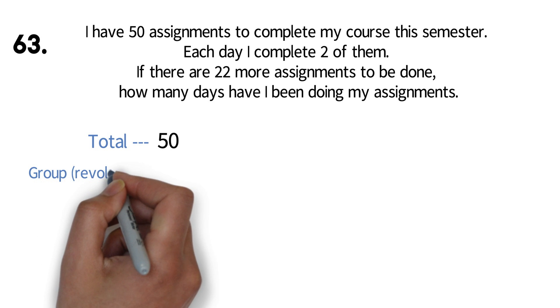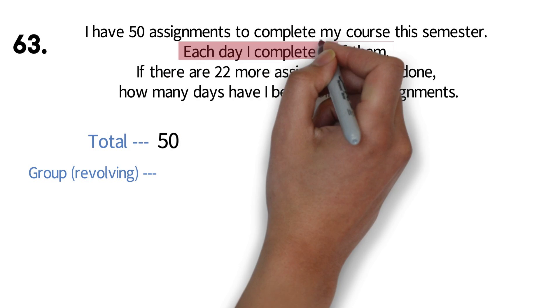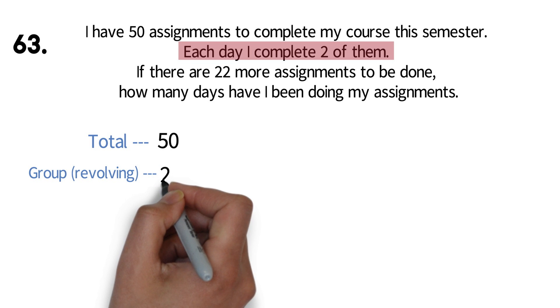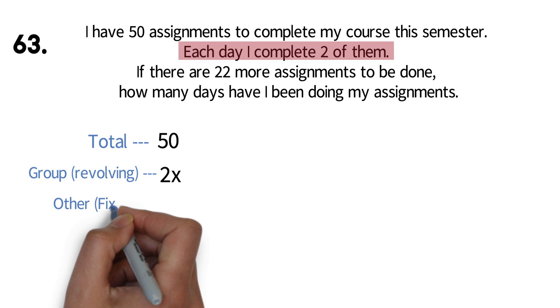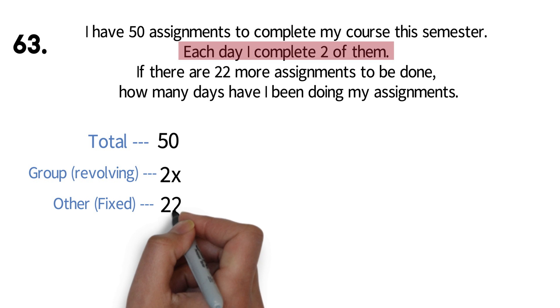Since all three values are assignments, our group will be our revolving number. Here, we do not see per day, but we can clearly see this statement. Each day, I complete two of them. It's the same as saying, I complete two assignments per day. So this will be 2x. Finally, we have what is left, or the fixed value. Here, this will be 22.